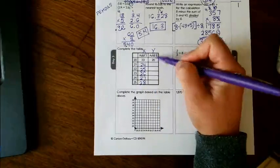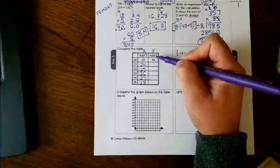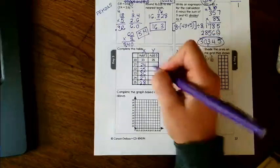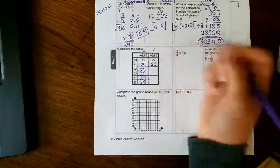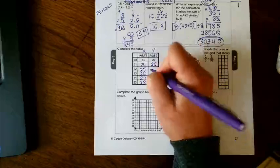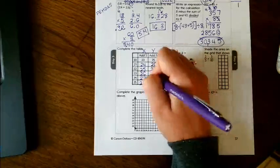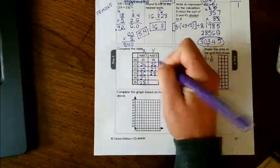All right, now we're adding 5 to all the numbers over here. So 21 plus 5 is 26, 22 plus 5 is 27, 23 plus 5 is 28, and again you see the pattern.